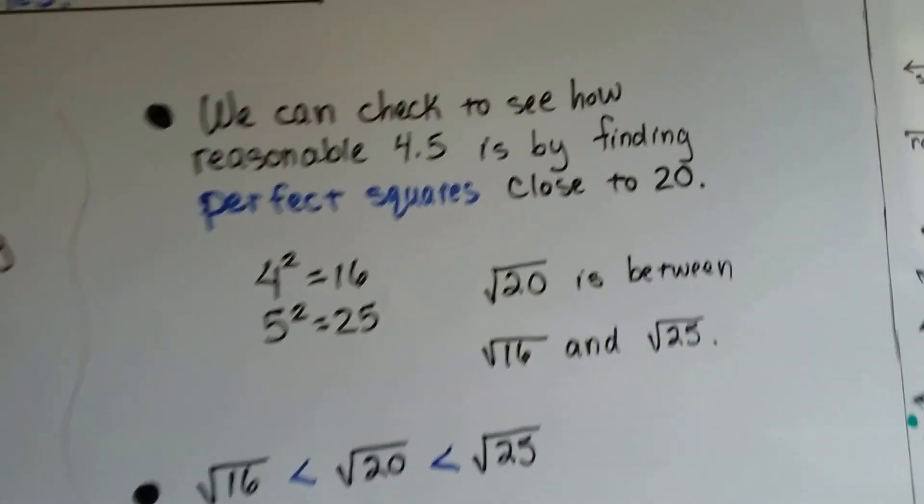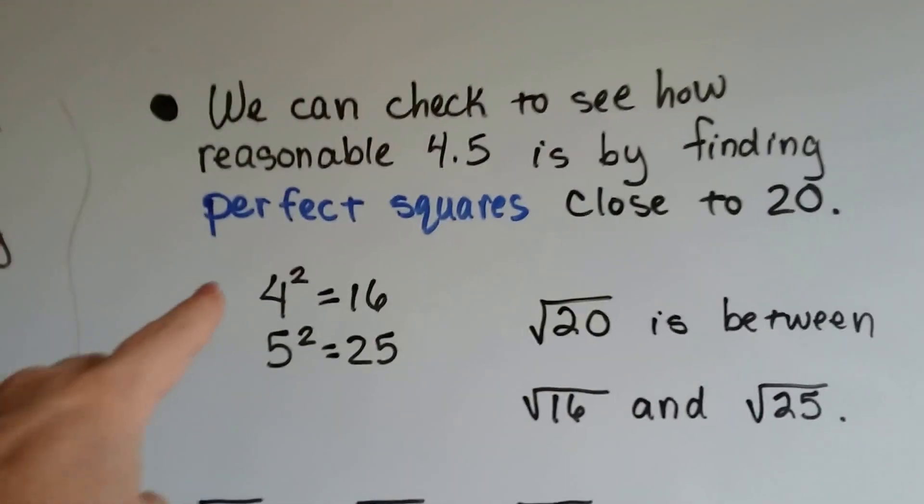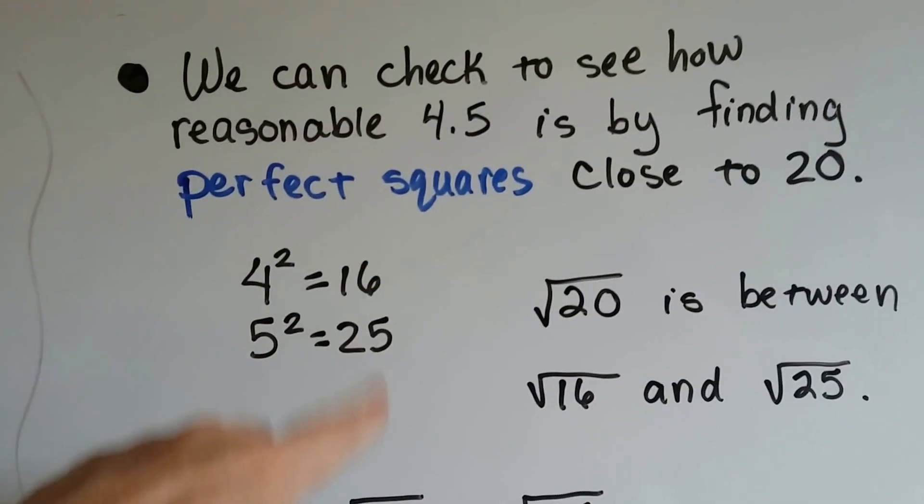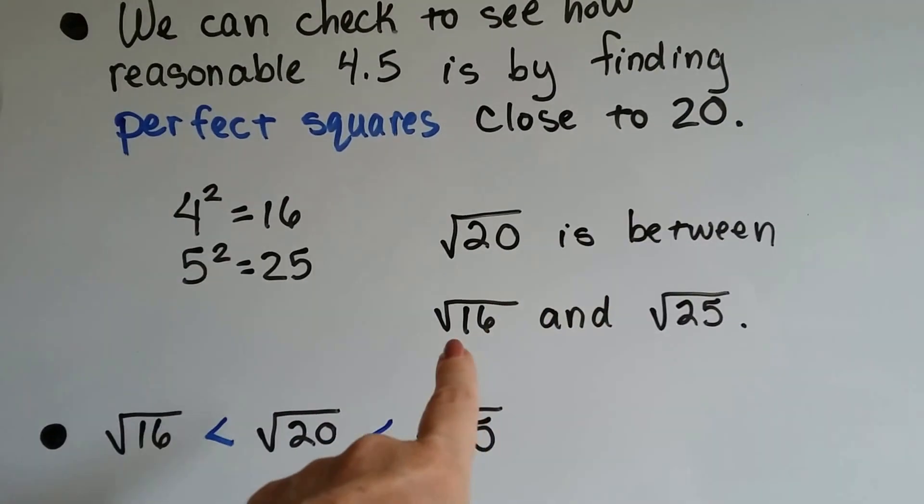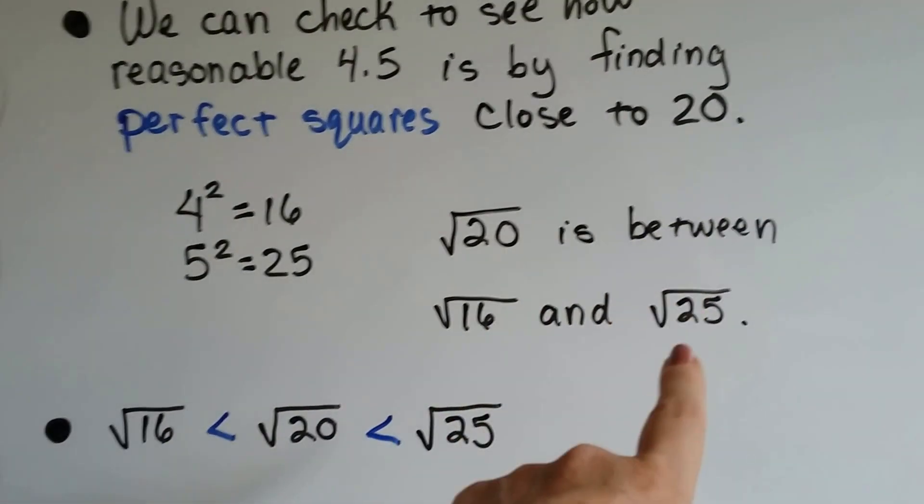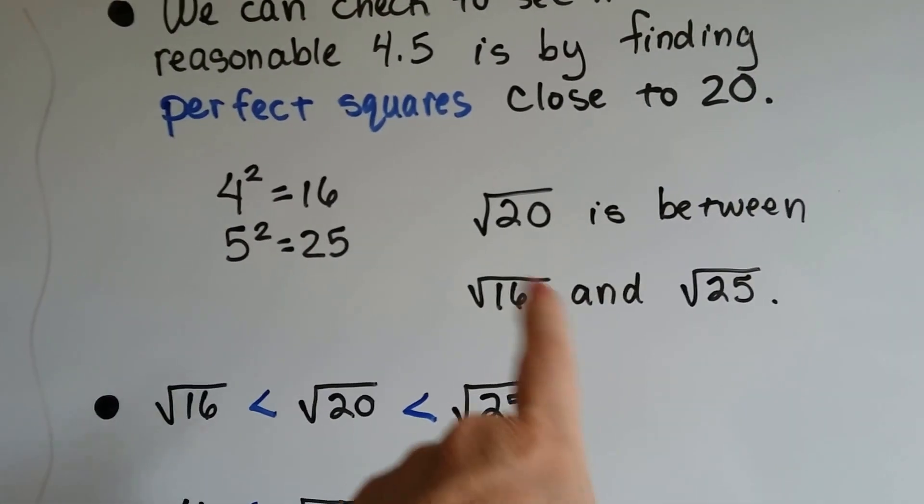Now, we can check to see how reasonable 4.5 is by finding perfect squares close to 20. As I said, 4 squared is 16. Well, 5 squared is 25. So the square root of 20 is between the square root of 16 and the square root of 25. See? It's going to be right in the middle there.